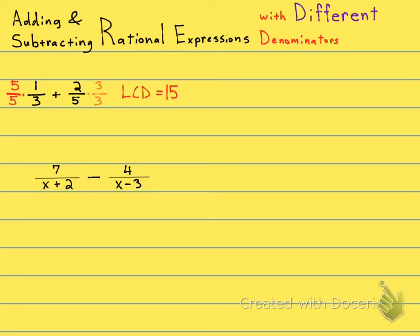So let's do my new fraction, my first fraction. 5 times 1, that's 5 over 5 times 3. 5 over 15, plus my new numerator, 2 times 3, 6 over 5 times 3, 15.